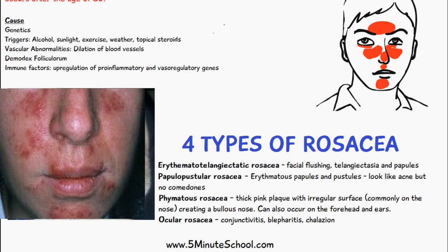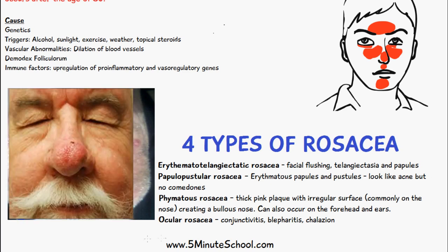The third type is phymatous rosacea, where there are thick, pink or skin-coloured plaques with irregular surfaces that appear very hard. It commonly appears on the nose — and is therefore referred to as a bulbous nose — but can also occur on the forehead and ears. A picture is included for reference.